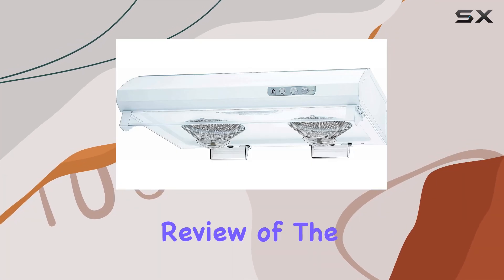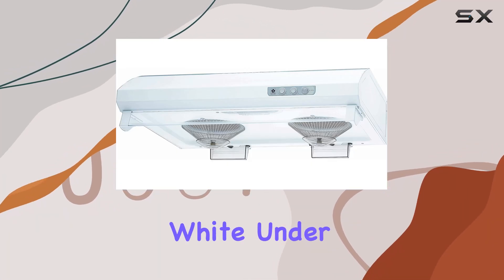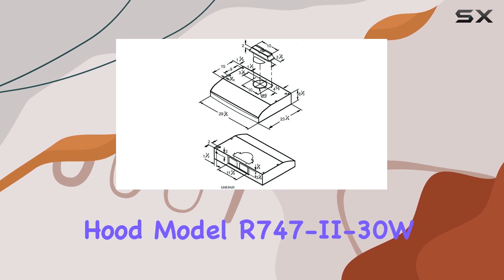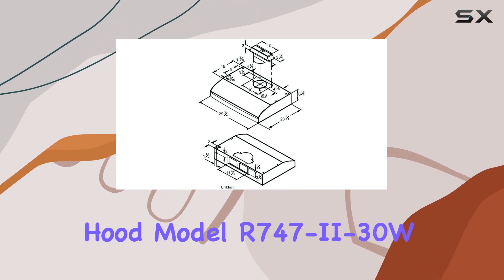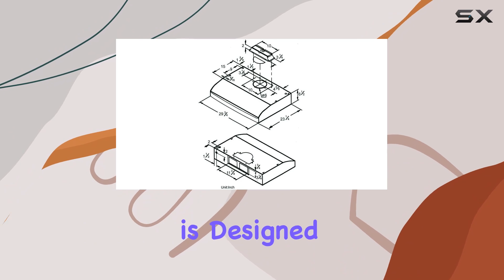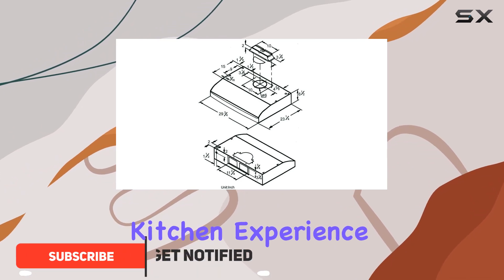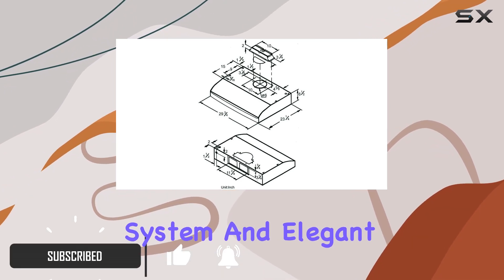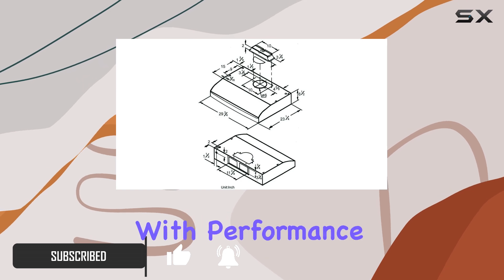Welcome to our comprehensive review of the Sakura 30-inch white under cabinet range hood, model R747-II-30W. This sleek hood is designed to elevate your kitchen experience with its powerful ventilation system and elegant white design. Let's start with performance.